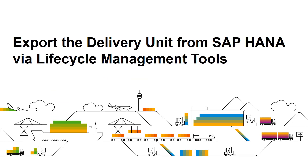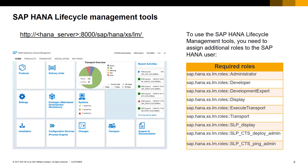Let's start with the export of your delivery unit from SAP HANA via the Lifecycle Management tools. We will use the SAP HANA Lifecycle Management tools, which are available as a URL on the SAP HANA server. There is no need to install any extra components on your HANA server or your local computer. You need to assign some extra SAP HANA XSLM Lifecycle Management roles to the SAP HANA user that will use the Lifecycle Management tools. You can find more details on how to assign roles in the SAP HANA application Lifecycle Management roles referenced at the end of this presentation.